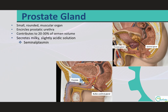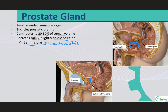Moving on, the prostate gland is a small muscular rounded organ. It encircles the prostatic urethra as it leaves the urinary bladder. The prostate gland produces prostatic fluid, which is a weakly acidic, milky secretion that contributes about 20 to 30 percent of the volume of semen. In addition to several other compounds, prostatic secretions contain seminal plasmin, an antibiotic that may help prevent urinary tract infections in males. These secretions are ejected into the prostatic urethra by peristaltic contractions of the prostate's muscular wall.